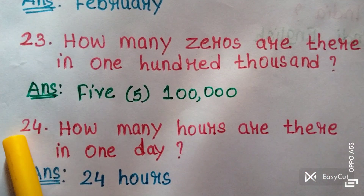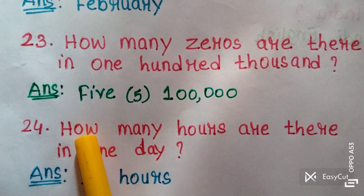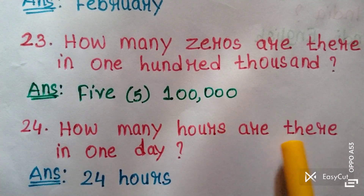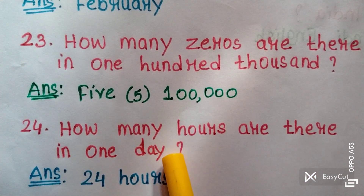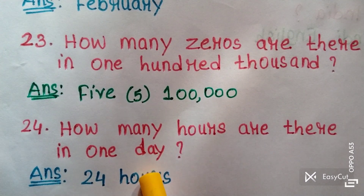Question twenty-four: How many hours are there in one day? Answer: 24 hours.